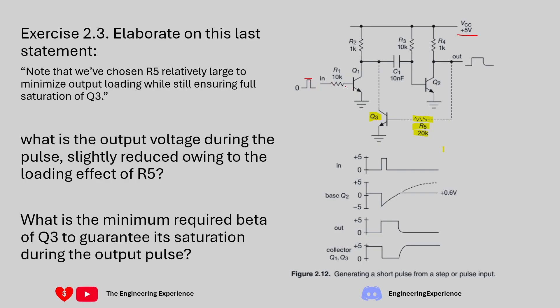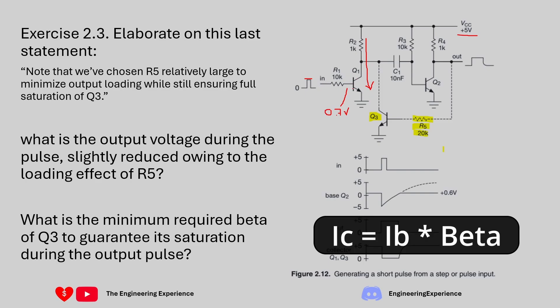When this is 5 volts you basically have 0.7 volts at the base-emitter junction, so you get a certain amount of current in this direction: 5 volts minus 0.7 gives 4.3V, divided by 10,000 ohms — roughly 430 microamps. This transistor will then amplify that current. Let's say the transistor has a beta of 50; whatever current is going down here will be amplified by beta going down this path.